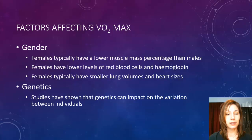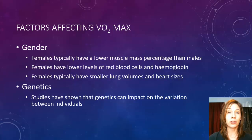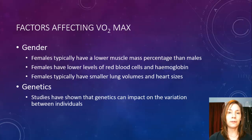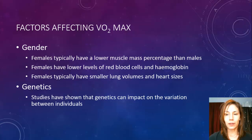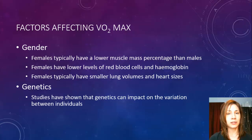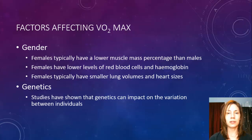Genetics definitely impacts on your VO2max. If your parents or your family heritage has a history of higher VO2max, you are more likely to have a higher VO2max too. It also comes down to the fact that if your family history included people with a higher lung volume, bigger hearts, bigger body mass — genetics all plays a part in that, and therefore your VO2max can be higher just because of their physiology.